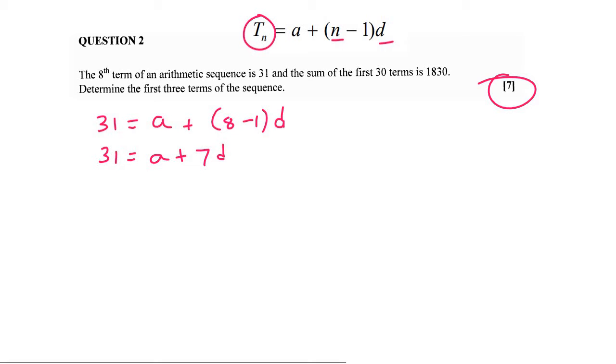Now you move on to the next piece of information. They tell you that the sum, now they're saying sum, so look out for that, of the first 30 terms is 1830. So we go get the sum formula, and you just fill it in. So 1830 is the answer. 30 terms, you say 30.